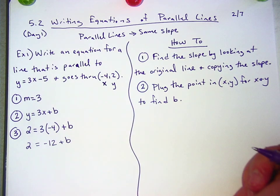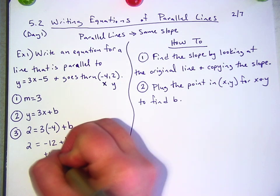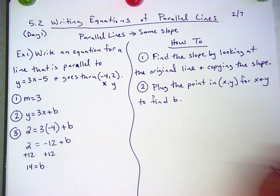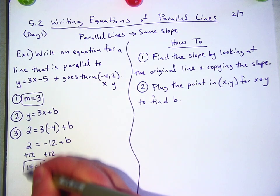How do I get b by itself? Renee? Add 12, add 12. That's 14 equals b. Okay, so now I've got my m, and I've got my b.